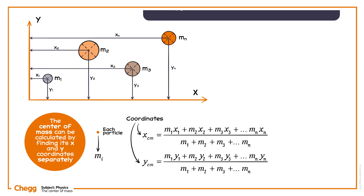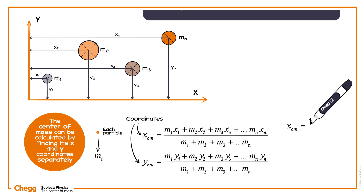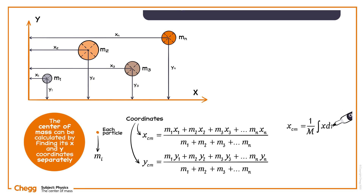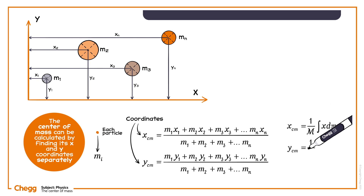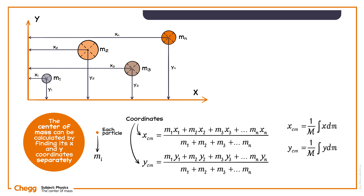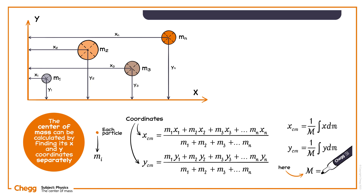In case of continuous mass distribution, x_cm equals 1 divided by M, times the integral of x dm, and y_cm equals 1 divided by M, times the integral of y dm, where M equals the integral of dm.